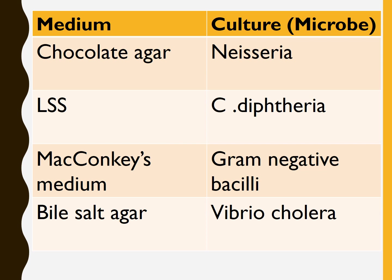Let us discuss culture media and the microbes. Chocolate agar is used for culturing Neisseria. Loeffler serum slope is used for culturing Corynebacterium diphtheriae. MacConkey's medium is used for culturing gram-negative bacilli. Bile salt agar and alkaline peptone water are also used for culturing Vibrio cholerae. The most important question: MacConkey's medium is used for culturing gram-negative bacilli.